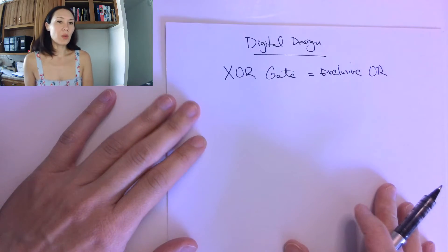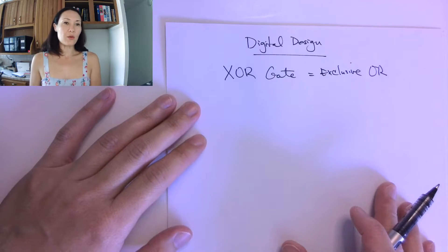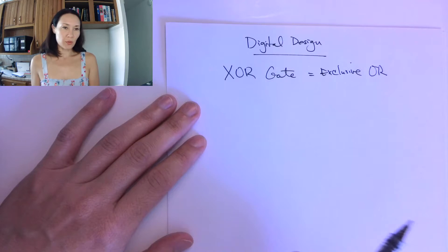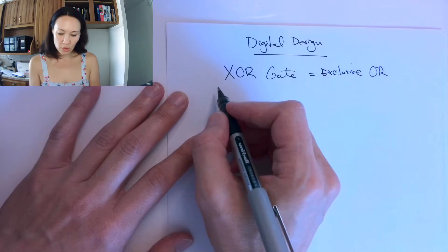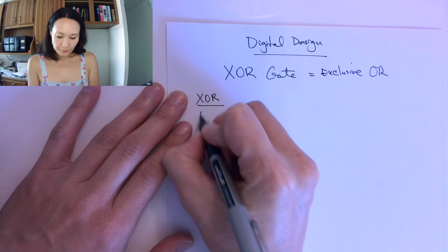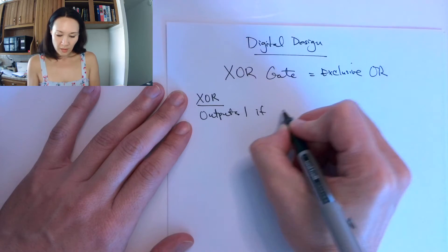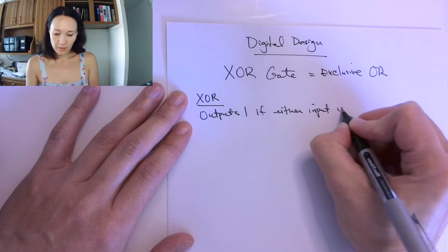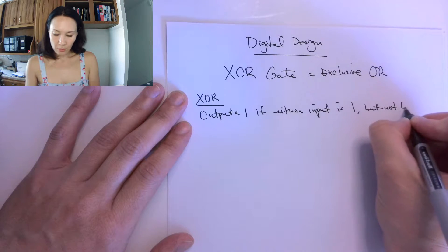It takes two or more inputs, and it's only going to output a high or a logical one if either of the inputs is one, but not both. So that's the definition of XOR, the XOR function. It outputs one if either input is one, but not both.